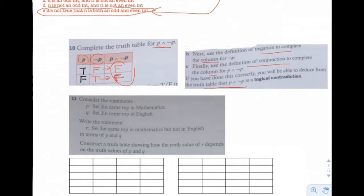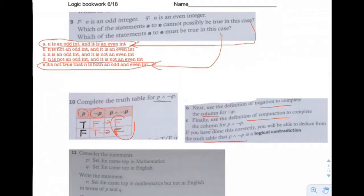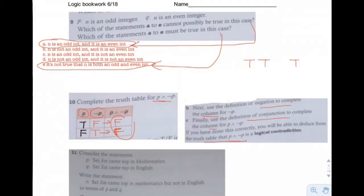Whenever you have two things joined by 'and' — like 'Ted is a boy and Ted is a soccer player' becomes 'Ted is a boy and a soccer player' — if either one is false, the whole statement becomes false. Both have to be true for 'and' to be true. So P and Q is true only when both are true; if one is false, it becomes false.